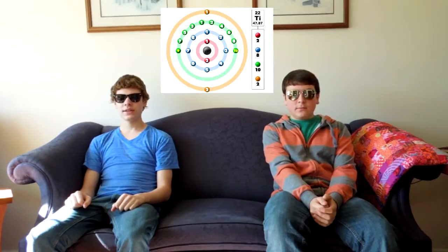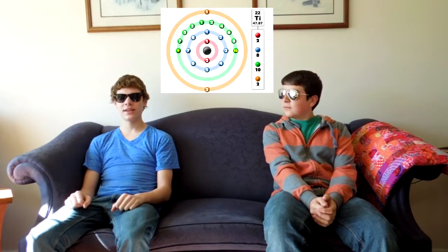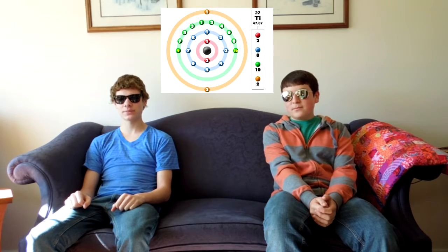Titanium's atomic structure is built up of twenty-two protons, twenty-six neutrons, and twenty-two electrons. Its first energy level has two electrons, its second energy level has eight electrons, its third energy level has ten electrons, and its fourth energy level has two electrons.